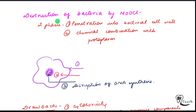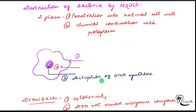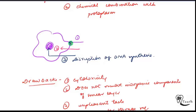NaOCl works in two phases to cause destruction of bacteria. First is penetration through the bacterial cell wall. The second is chemical combination with the protoplasm — it will penetrate the bacteria's cell wall, and after that the protoplasm will react. Additionally, it causes disruption of DNA synthesis.